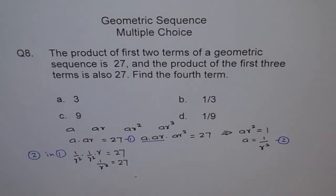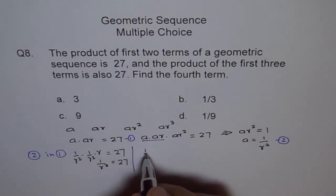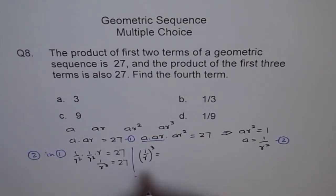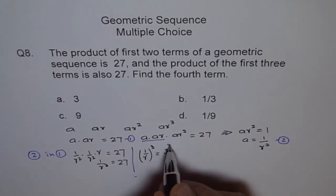So what I will do now is I will write this as 1 over r whole cube equals 27, which is 3 cube, right? Is that okay?